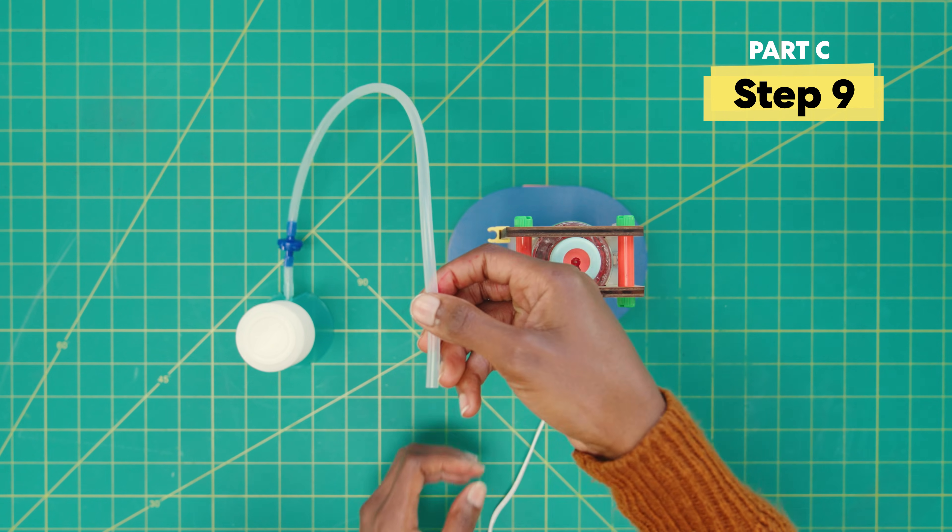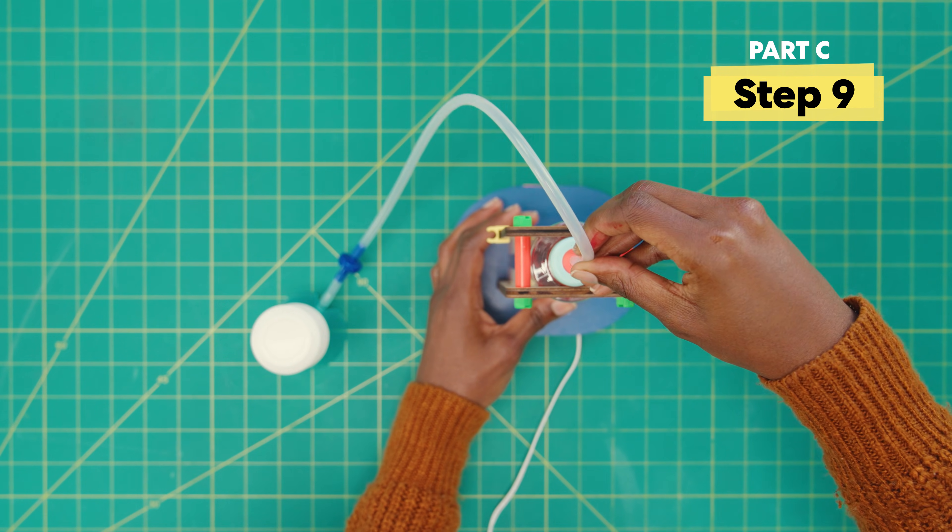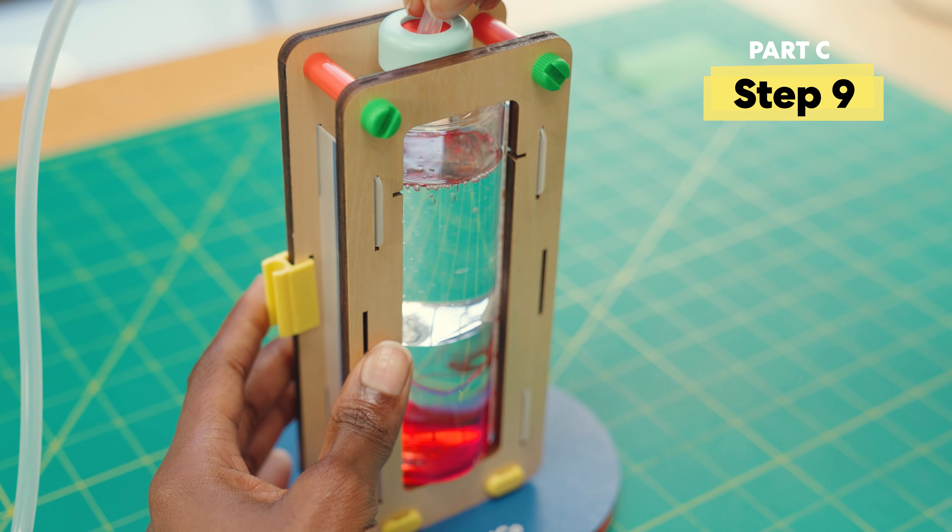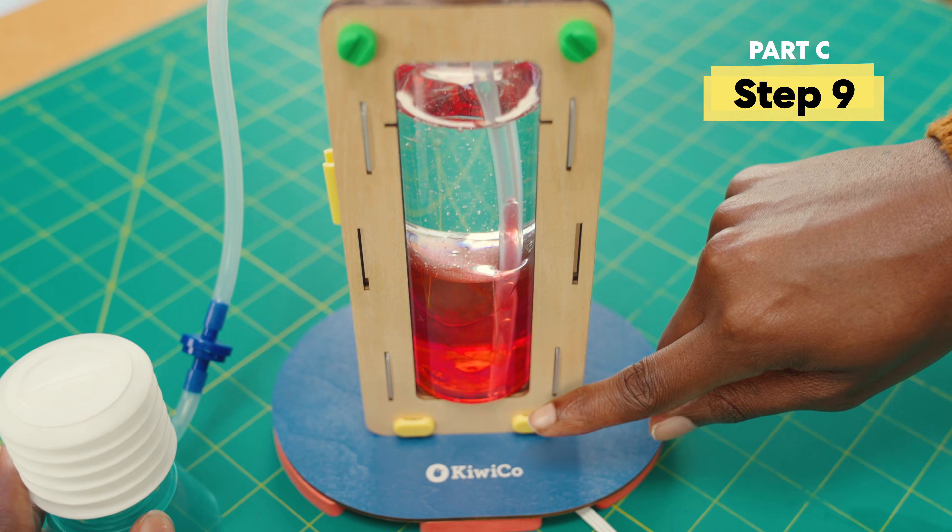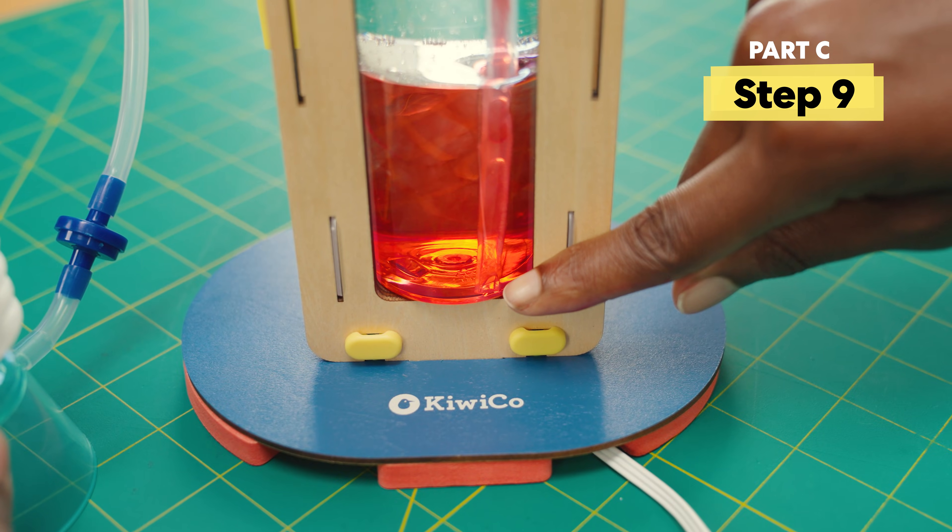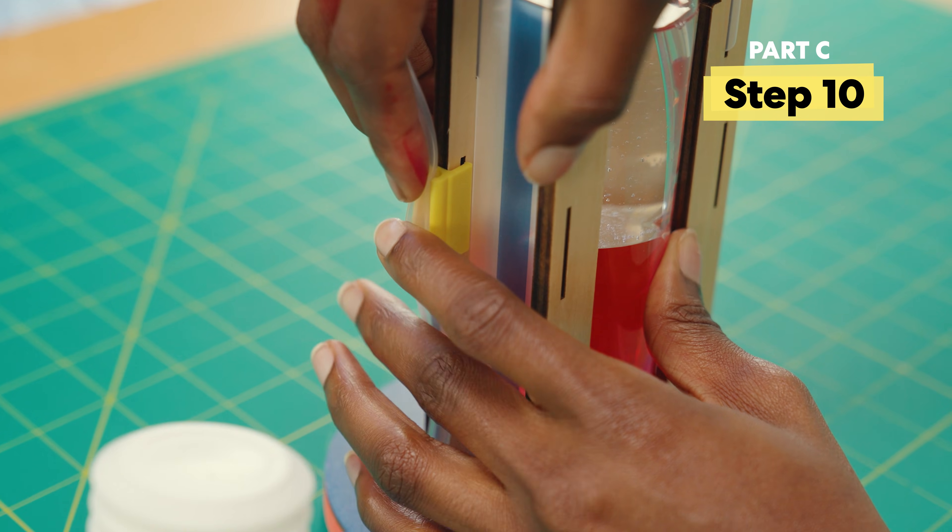All right, now grab the tube and pump from Part B and attach to the gasket. Make sure the tube reaches all the way down to the bottom of the bottle. Okay, let's attach the tube to the tube clip.